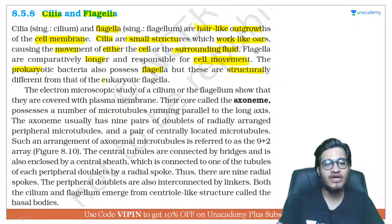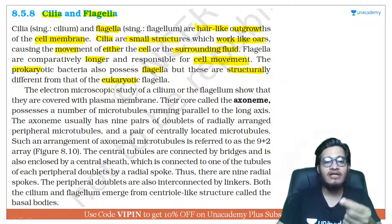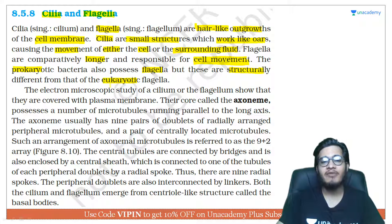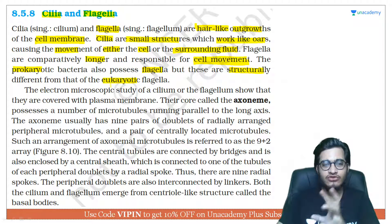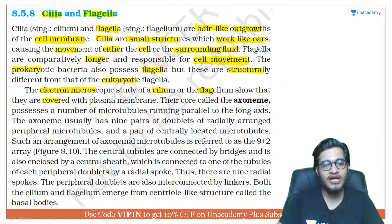Prokaryotic bacteria also possess flagella, but they are structurally different from eukaryotic flagella. In prokaryotes, the flagellum is made of flagellin protein, whereas in eukaryotes it is made of tubulin protein. So there is a difference in the nature of protein between the two.